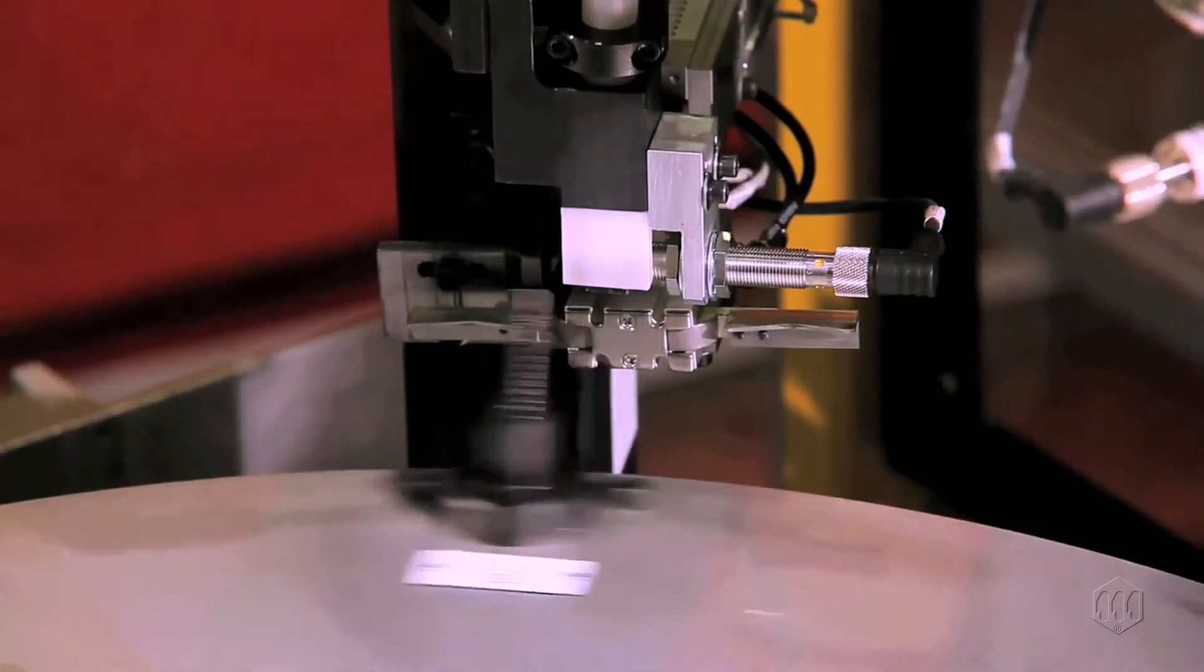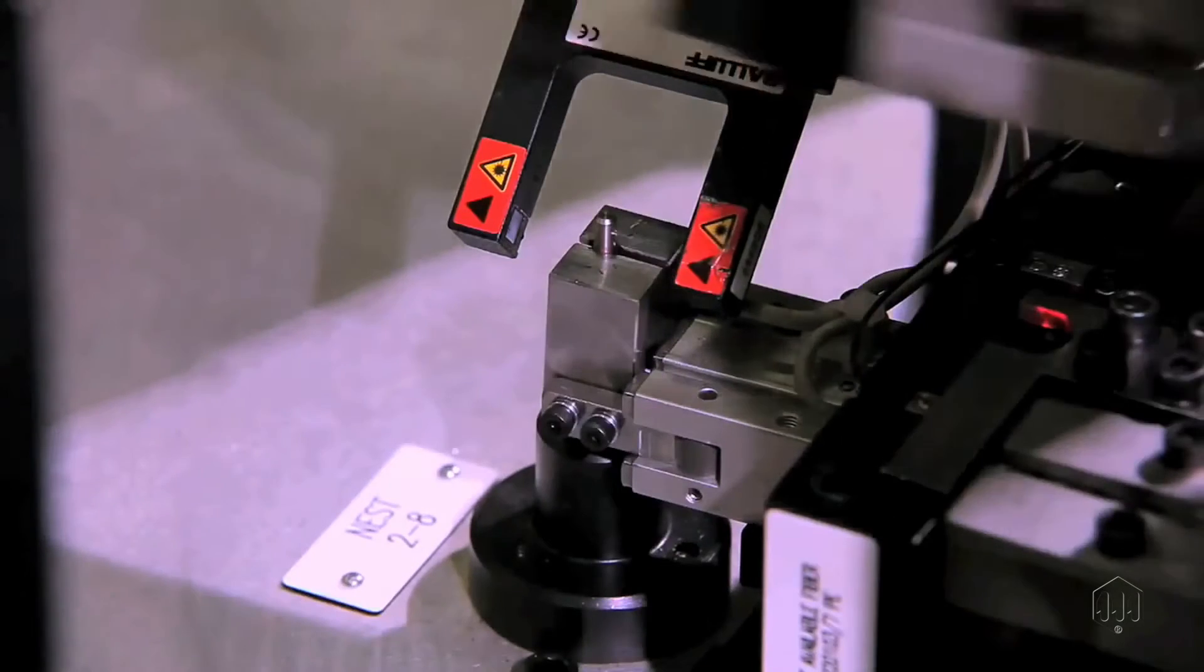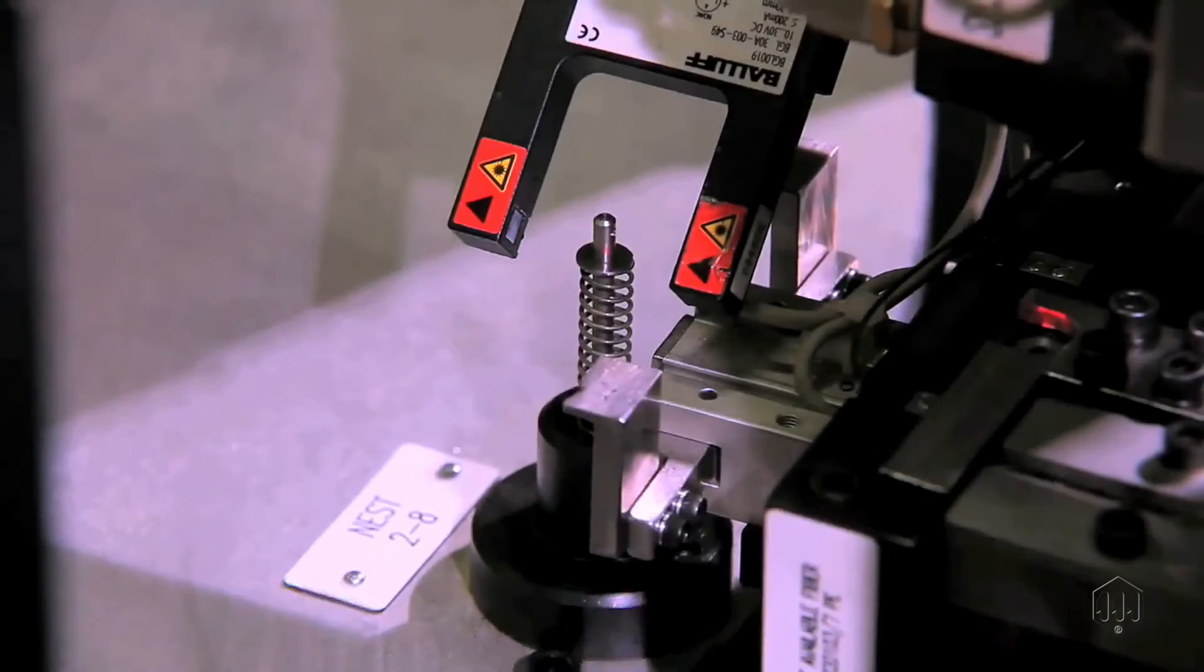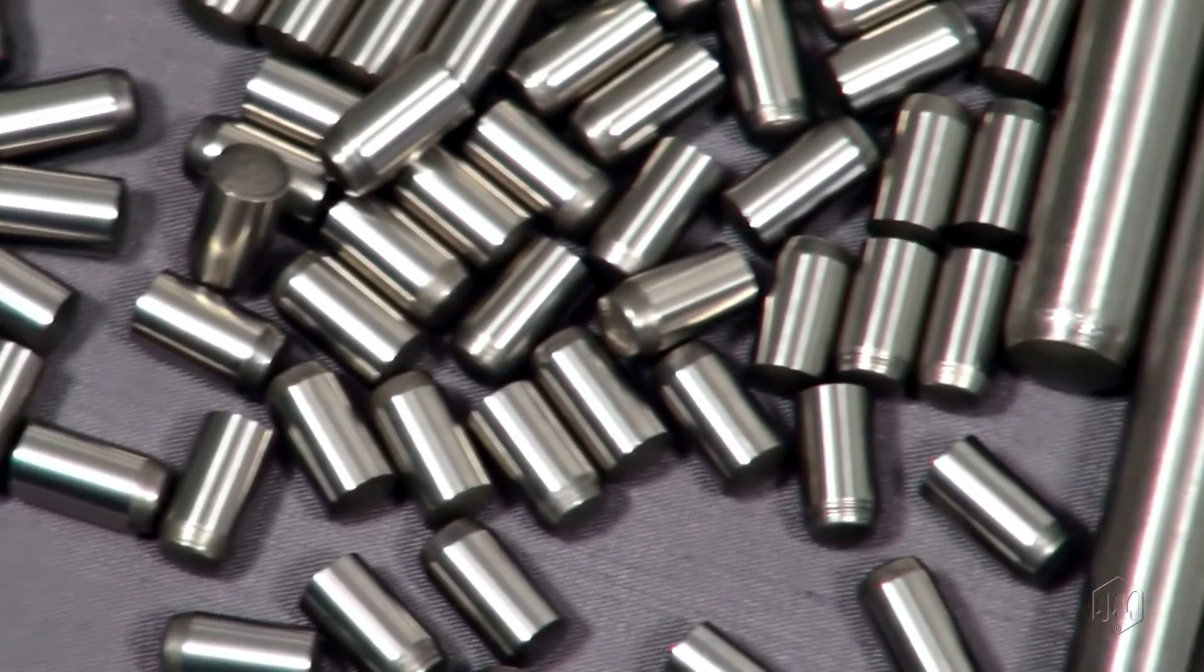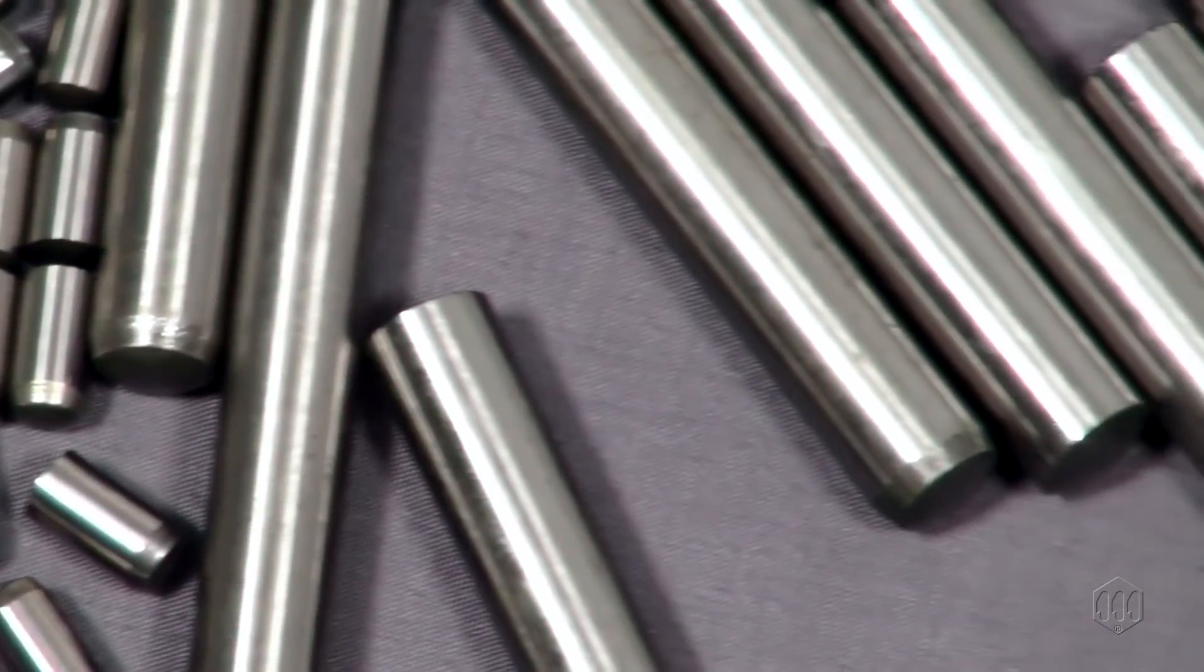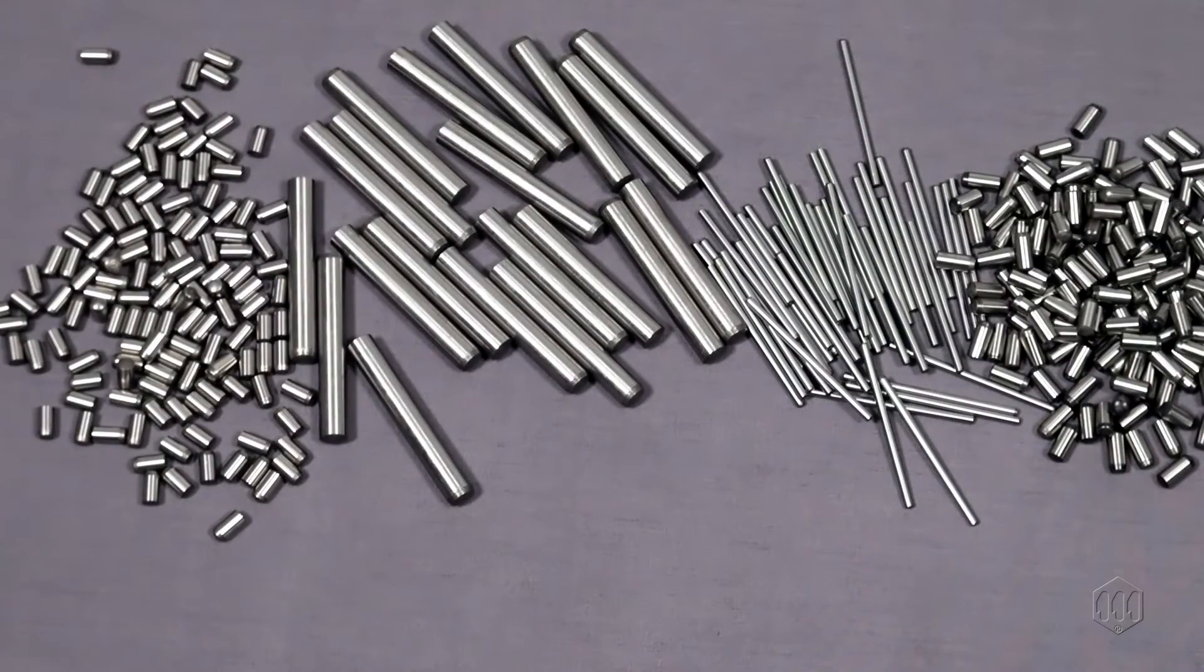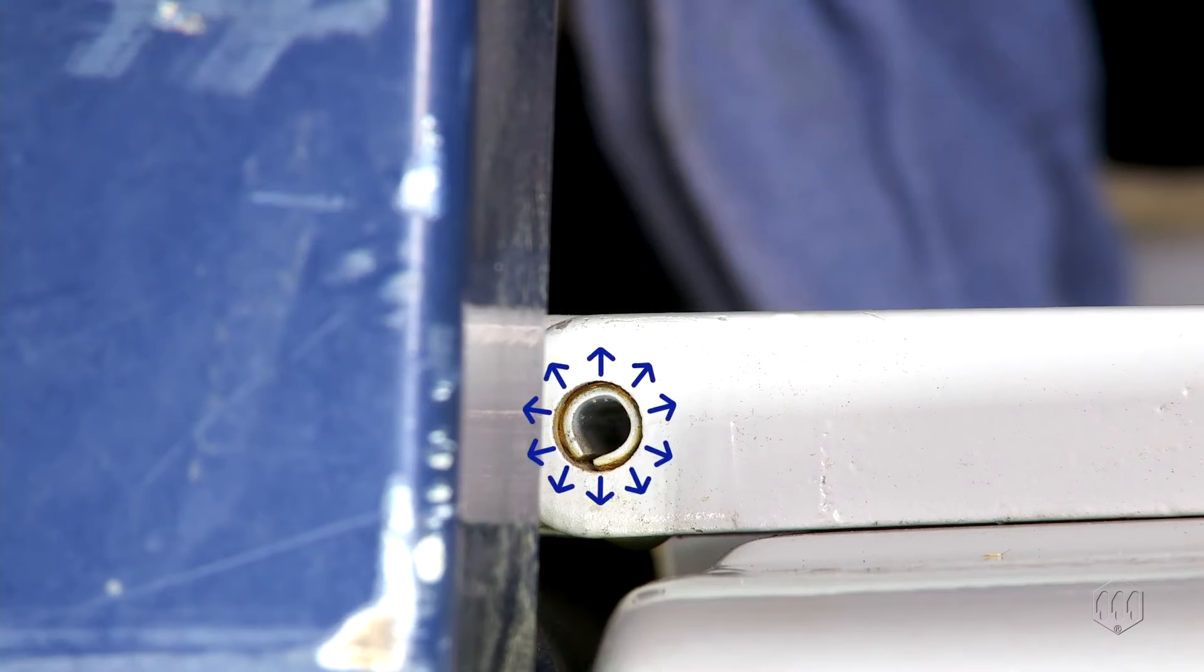Prone to jolts or vibration, ordinary dowel pins or other metric fasteners can respond to these disturbances by coming loose and coming out of their shafts. A spring pin produces force of its own to counteract those outside forces.